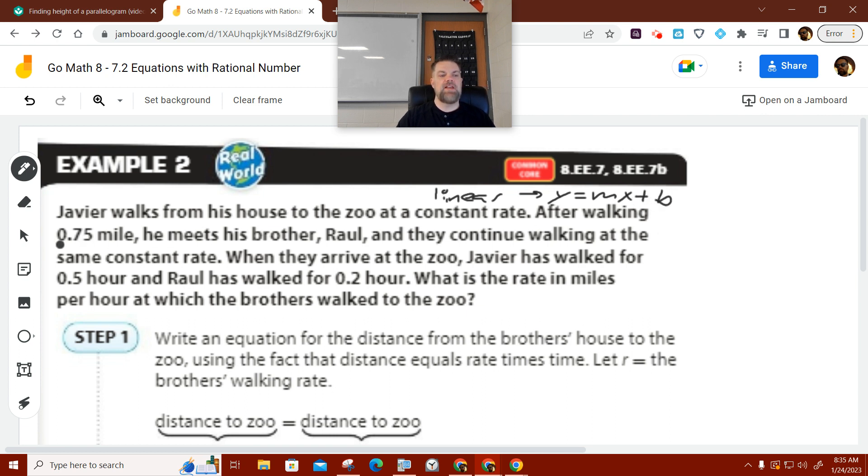Alright, cool. After walking 0.7 miles, he meets his brother Raul. And they continue walking at the same constant rate. When they arrive at the zoo, Raul has walked for a half hour, or no, Javier has walked for a half hour and Raul has walked for 0.2 hours. What is the rate in miles per hour at which both brothers walk?